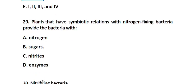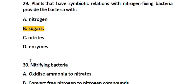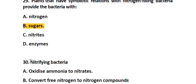Question number 29. Plants that have symbiotic relations with nitrogen fixing bacteria provide the bacteria with: Option A. Nitrogen, Option B. Sugars, Option C. Nitrites, Option D. Enzymes. The correct answer is Option B. Sugars.